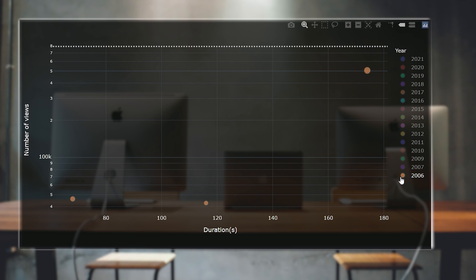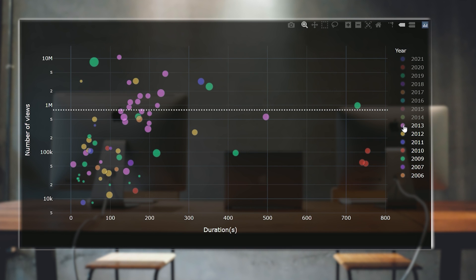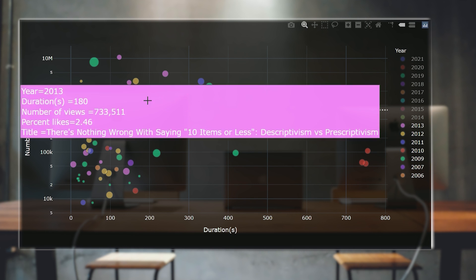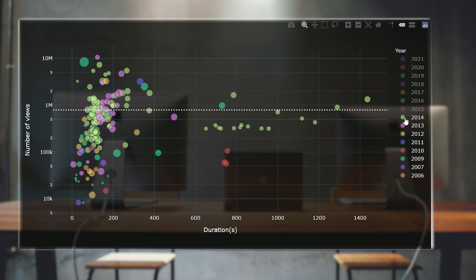Let's look at how the channel's evolved over time since 2006 when Tom first started uploading. You can see gradually how more videos go above that median value. And then in 2013, which was a really important year for the channel, we have quite a big cluster of videos doing very well indeed. That trend continues, but then a new trend emerges.